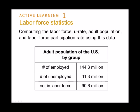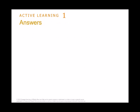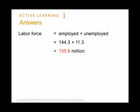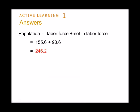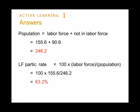To compute the labor force, unemployment rate, adult population, and labor force participation rate: the labor force is employed plus unemployed, which is 155.6 million. The unemployment rate is the proportion of the labor force that is not working and looking for a job — 11.3 million out of 155.6 million — about 7.3%. The total adult population is 246 million. The labor force participation rate is about 63%, meaning 63% of adults in the US either work or are looking for a job.